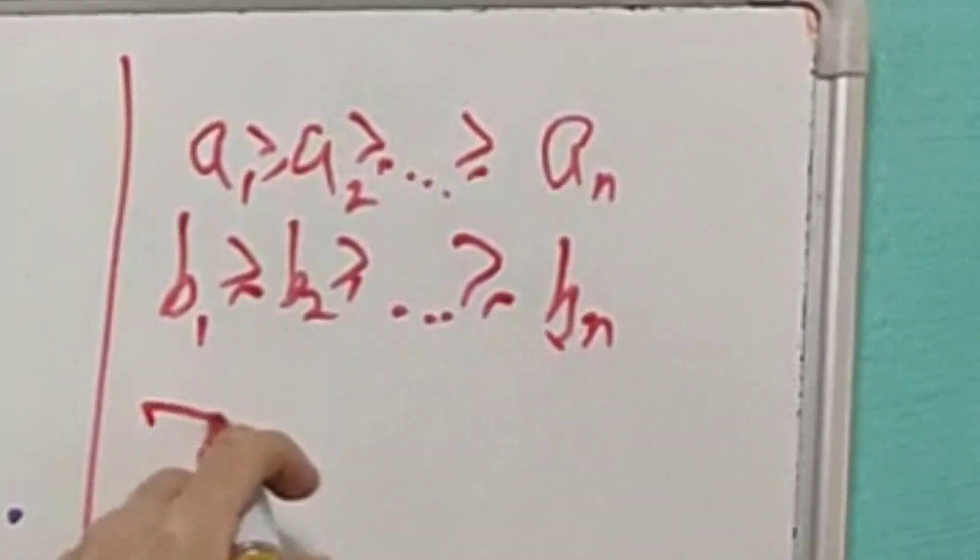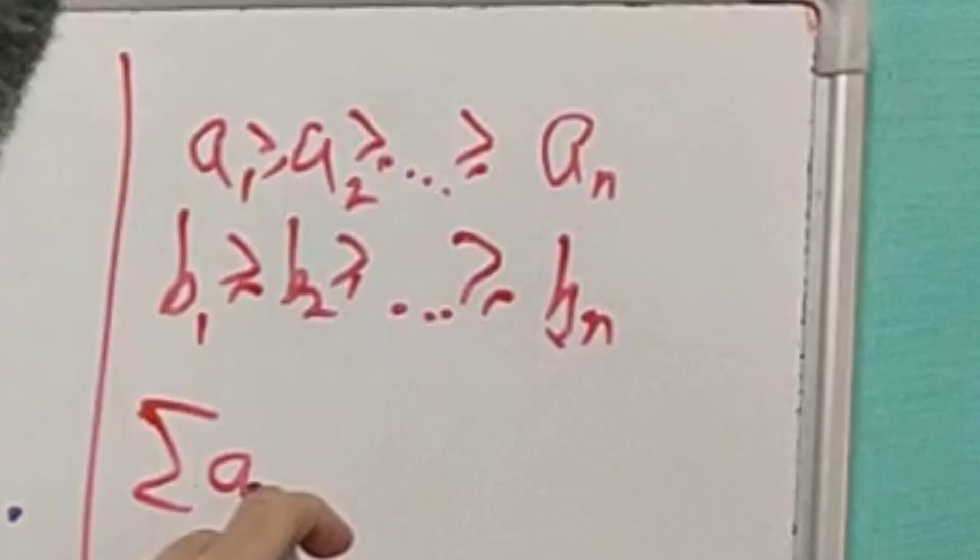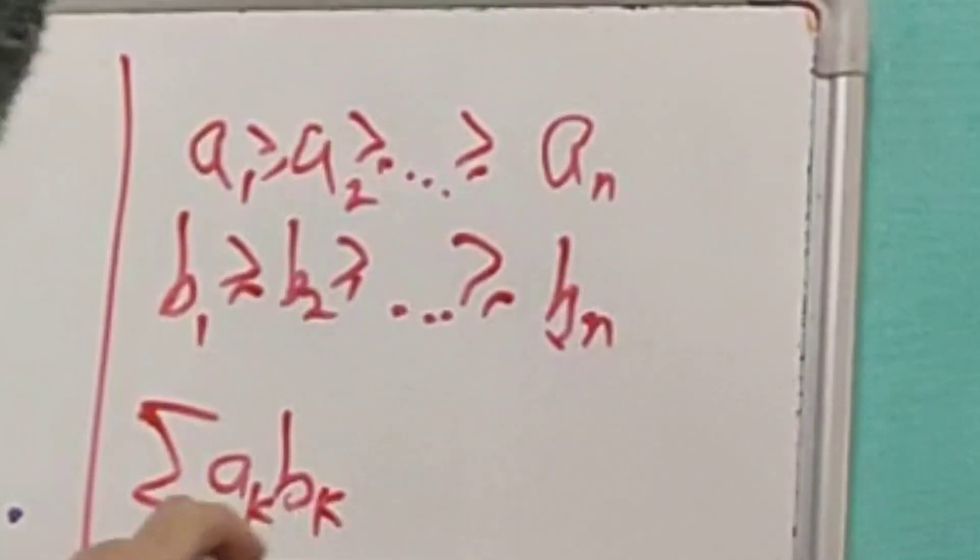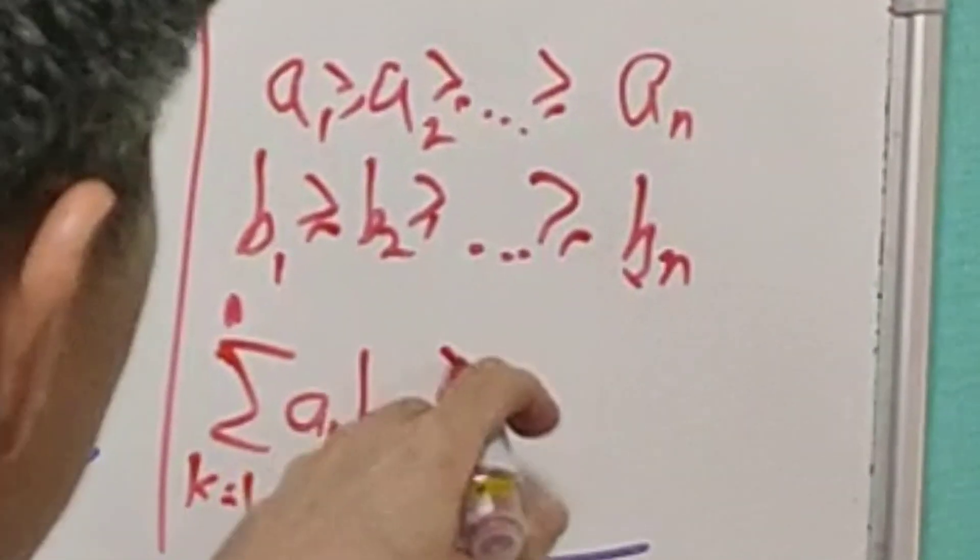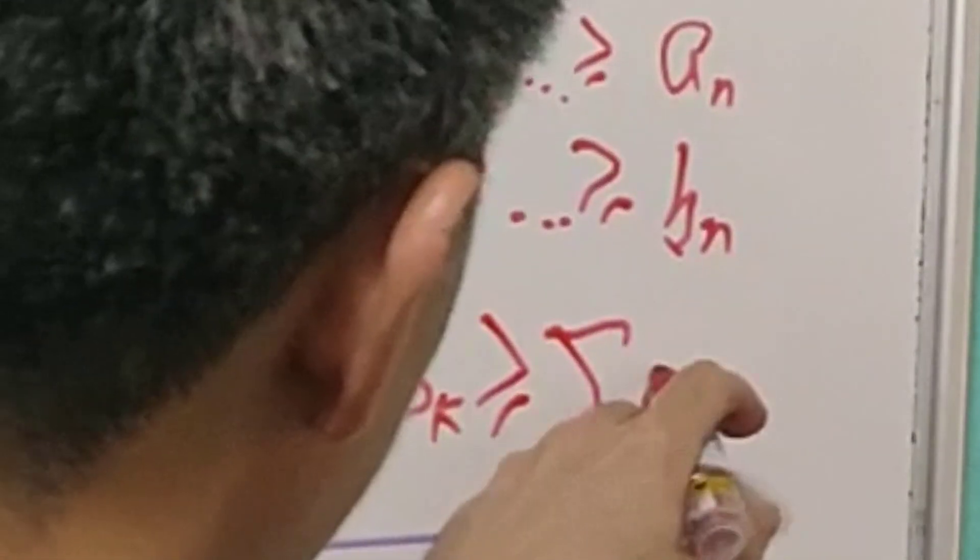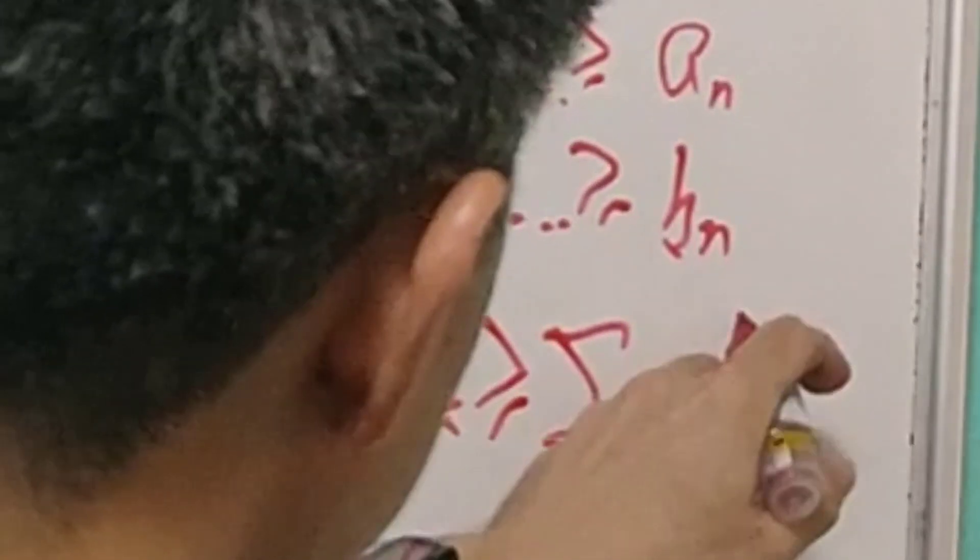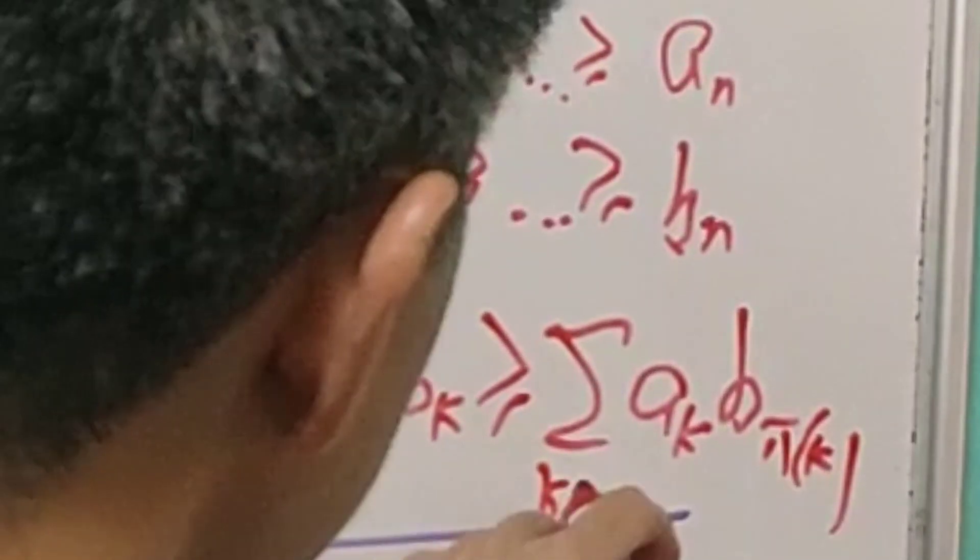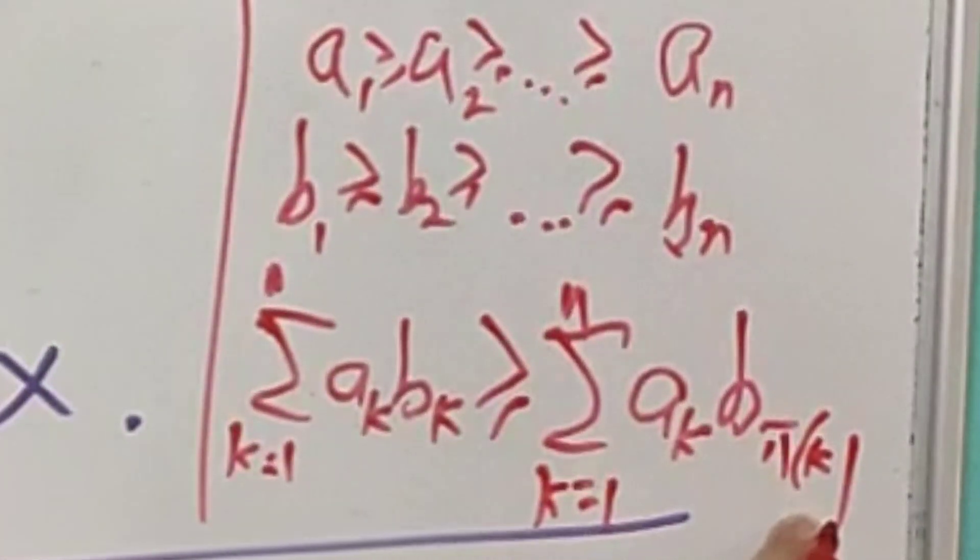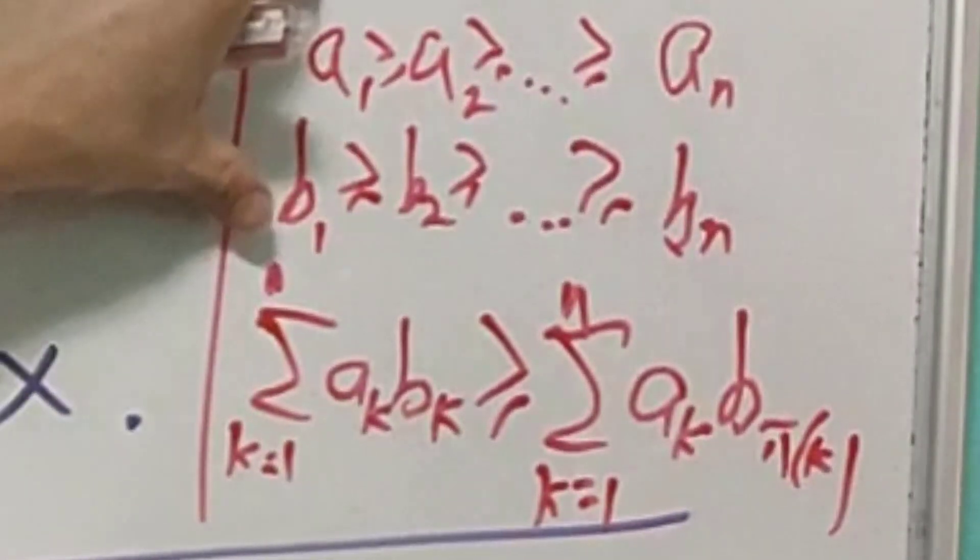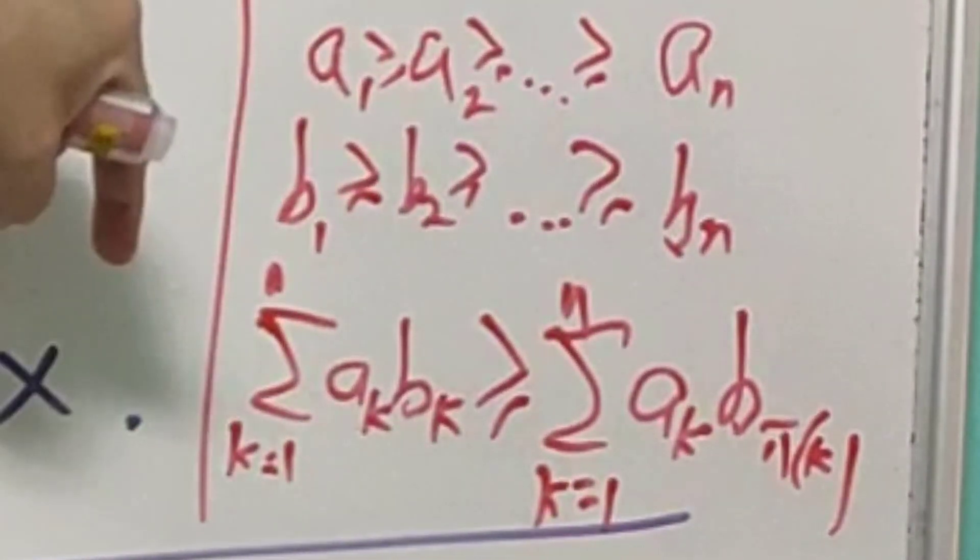Then we say that the summation AK BK, where K equals to 1 to N will be the maximum for the summation of AK and B pi K, where K equals to 1 to N. This pi K is actually the permutation of 1 to up to N.